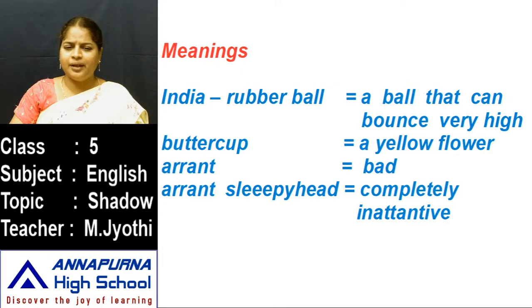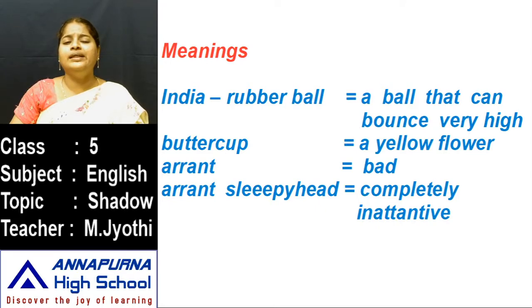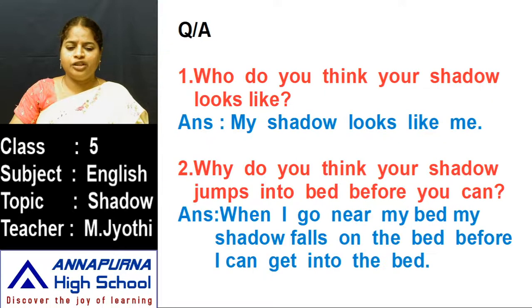Meanings: India rubber ball — a ball that can bounce very high. Buttercup — a yellow flower. Aren't — bad. Aren't sleepy head — completely inattentive.